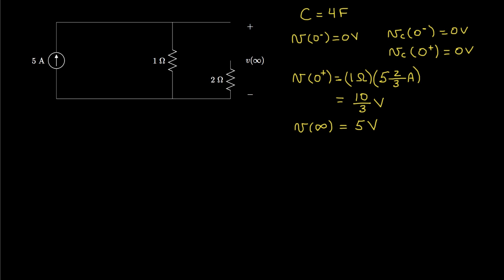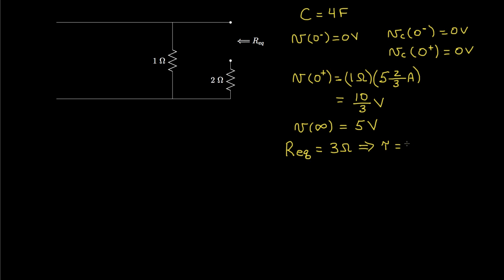The last thing we need to do is determine the equivalent resistance. We turn all of the sources off — replacing this current source with a 0-amp current source, which is equivalent to replacing it with an open — and we look at the resistance looking back through those terminals for the capacitor. That equivalent resistance is 2 ohms in series with 1 ohm, so that's 3 ohms. The time constant is the equivalent resistance, 3 ohms, times the capacitance, 4 farads — so 12 seconds.